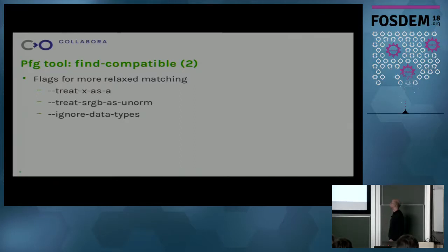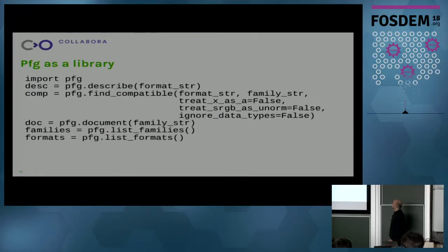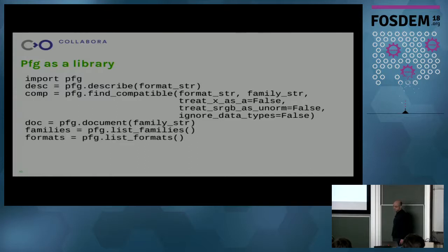These flags are useful in different scenarios. Sometimes the formats we want to match don't have sRGB variants, so the best we can do is UNORM, or they don't have X variants so we are okay matching with A. The PFG tool we've been talking about is really just a frontend to the PFG library, which is a Python module library where all the magic happens. It exports operations which match exactly what the frontend exposes as a command line.